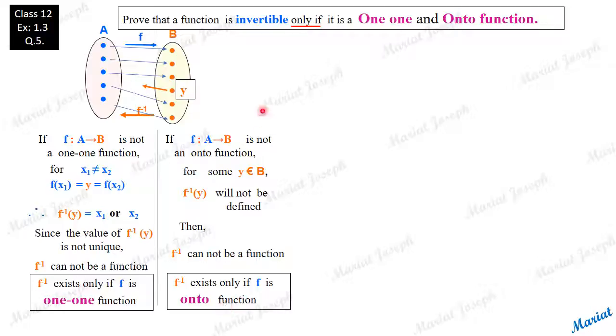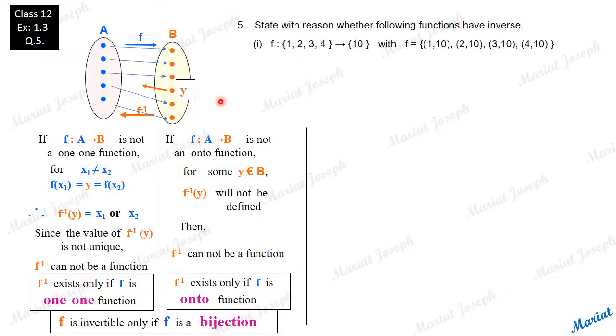Hence, for a function to be invertible, f has to be one-one function as well as onto function. Now let's do some verifications, some numerical questions.